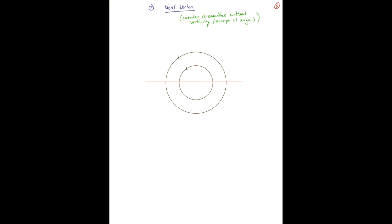So now we'll consider the second idealized vortex, and this one's actually called the ideal vortex. And it has circular streamlines, as before, here. Streamlines are in black.